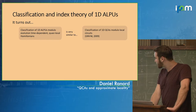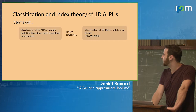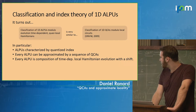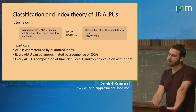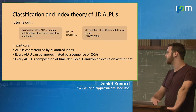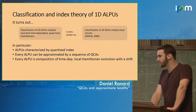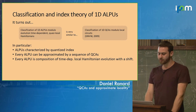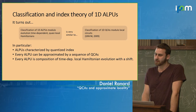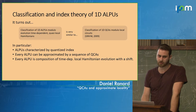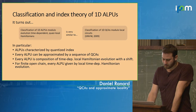The classification turns out pretty much the same: 1D ALPUs modulo time-dependent quasi-local Hamiltonians gives the same index theory. Not only are they characterized by this quantized index, but you can take any ALPU and approximate it with a sequence of QCAs — that's basically the proof method. Every ALPU will be the composition of a time-dependent local Hamiltonian with a shift. The time dependence of the local Hamiltonian is actually necessary — you couldn't get away with just a time-independent local Hamiltonian.